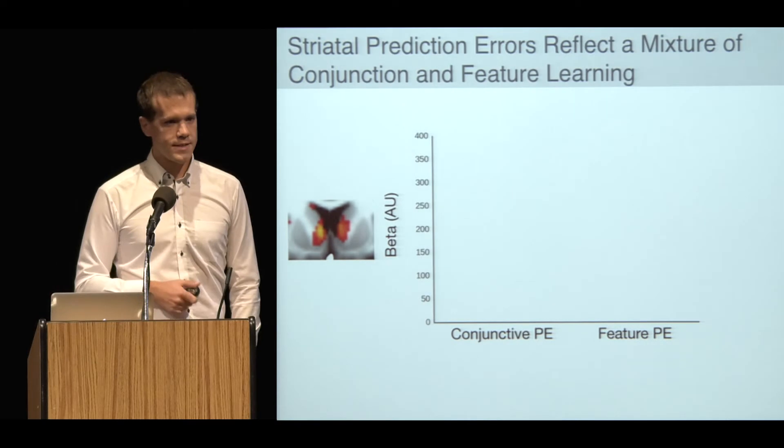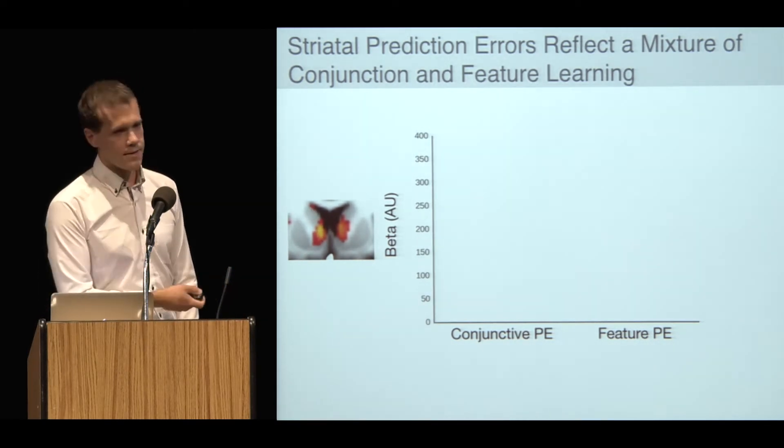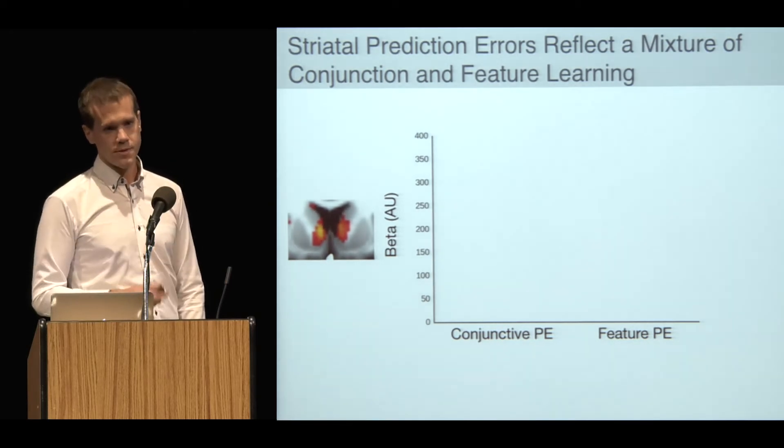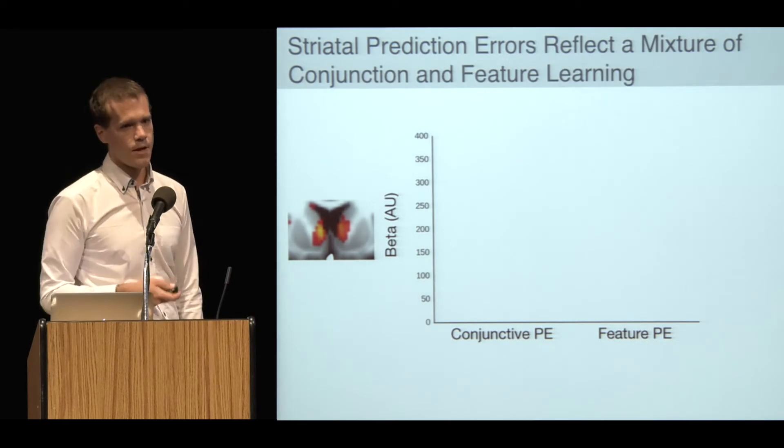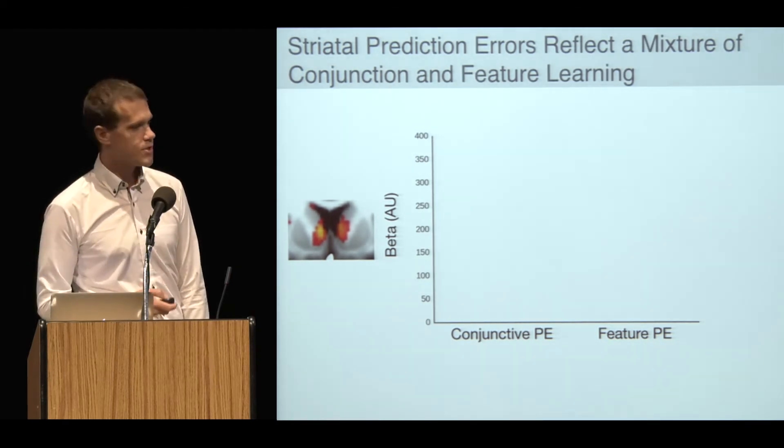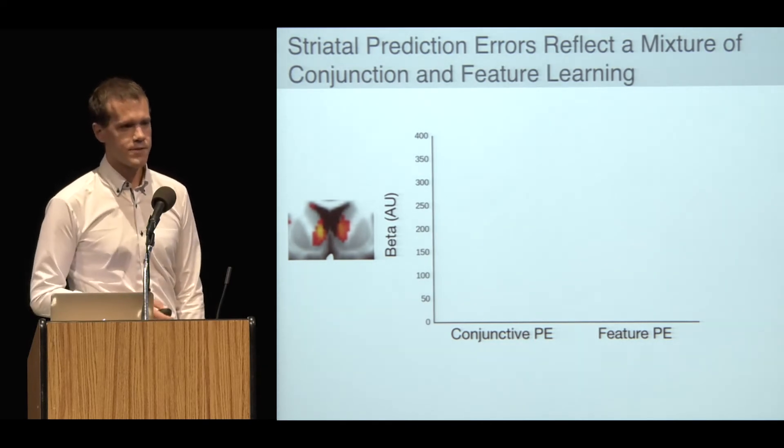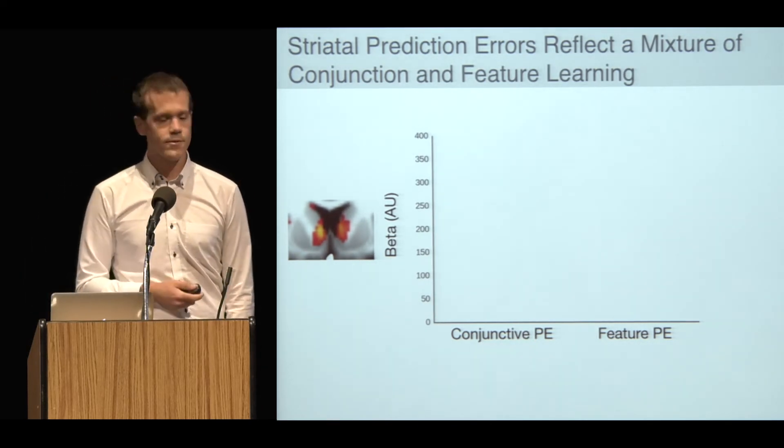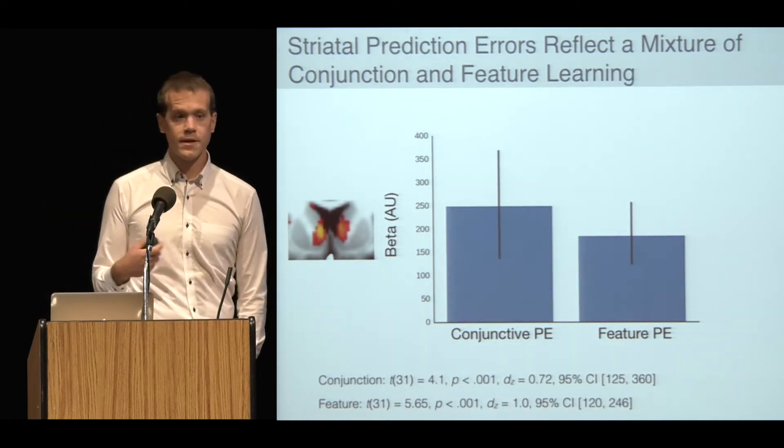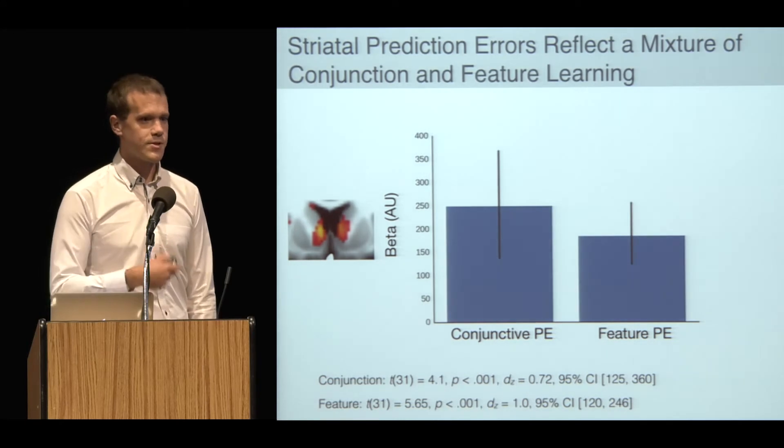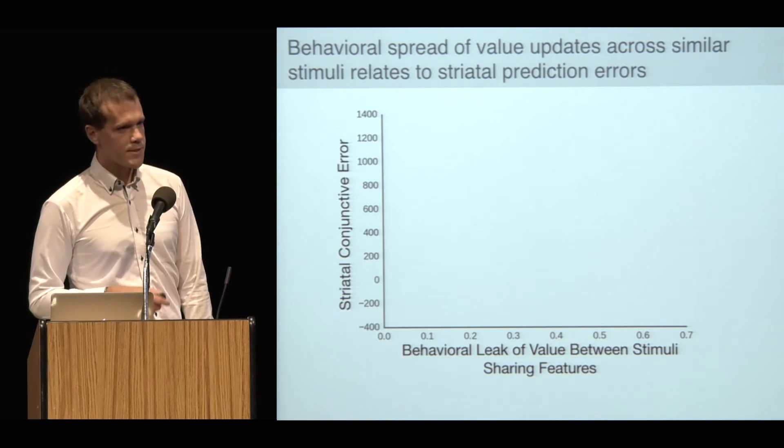I don't have time to go into the details, but I separated out the prediction error into two components, one that depends entirely on learning just about features with no knowledge of conjunctions, and one that has the correct knowledge of the task dynamics and knows about conjunctions. Plotted on the y-axis here is the bold response from an area of the striatum that shows this prediction error response. The short story is I find evidence for both. This mirrors the behavioral effect that there might be a mixture of learning strategies going on.